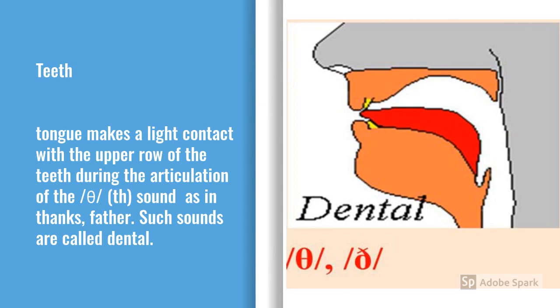Some sounds are produced with the help of teeth. The blade of the tongue makes a light contact with the upper row of teeth during the articulation of the sound TH, as in 'thank' and 'father'. Such sounds are called dentals.